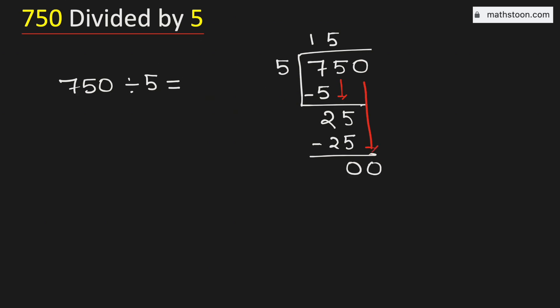But see that this is the number 0. And we know that 5 times 0 is 0. Subtract, we get 0.